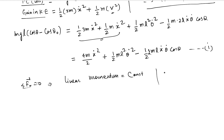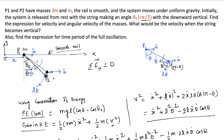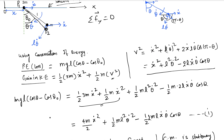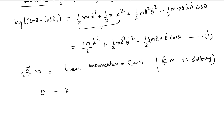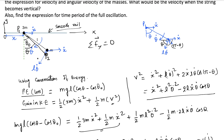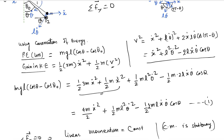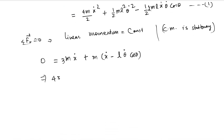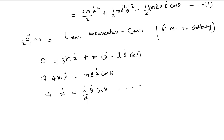This also means the center of mass is stationary. The initial momentum is zero. Setting final momentum equal to zero: 3m times x dot plus m times (x dot minus l theta dot cos theta) equals zero. This gives 4m x dot equals ml theta dot cos theta, and therefore x dot equals (l by 4) times theta dot cos theta. Let's call this equation two.